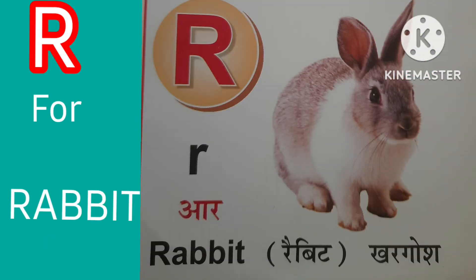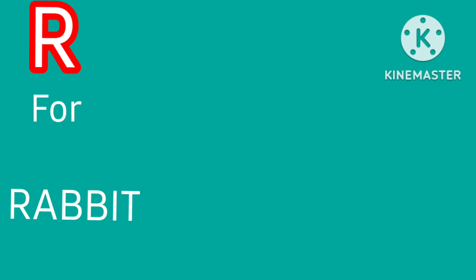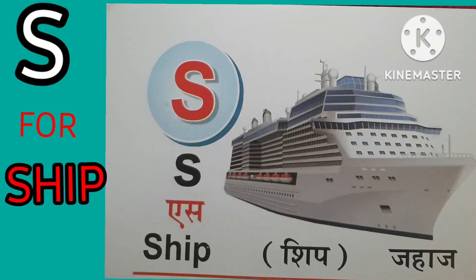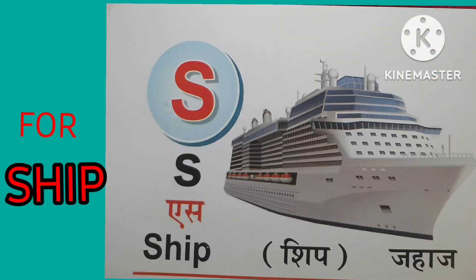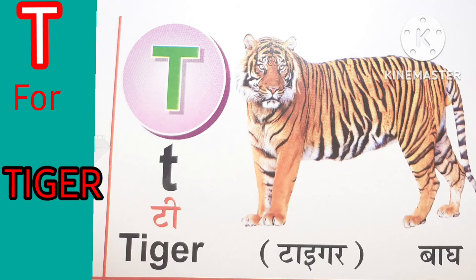R for rabbit. Rabbit means khargosh. S for sheep. Sheep means jahaj. T for tiger. Tiger means bug.